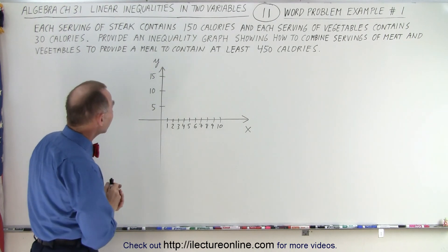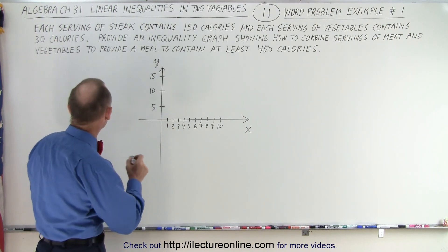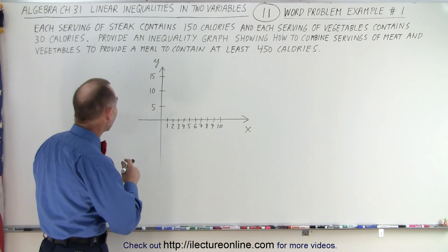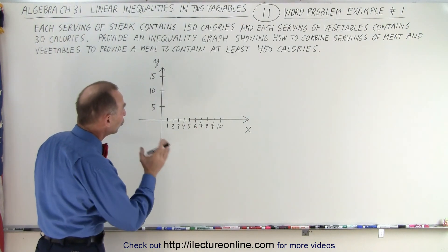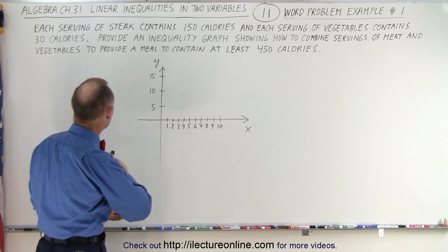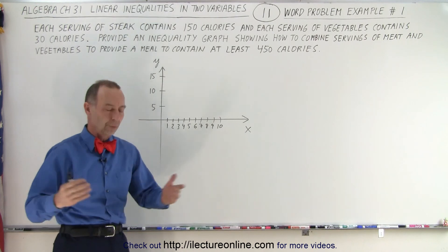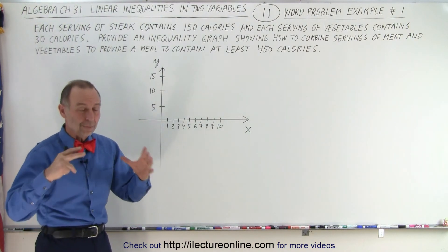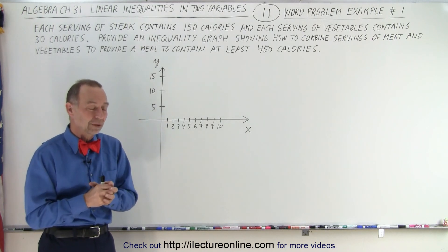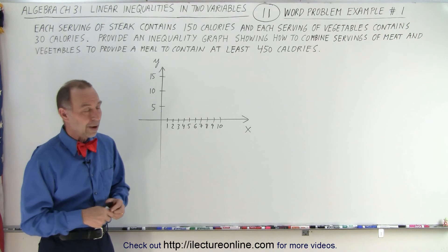Each serving of steak contains 150 calories, and each serving of vegetables contains 30 calories. Provide an inequality graph showing how to combine servings of meat and vegetables to provide a meal to contain at least 450 calories. We're going to put a meal together that contains steak and vegetables, and the meal has to be at least 450 calories. How many servings of each will that require? There's a number of combinations.